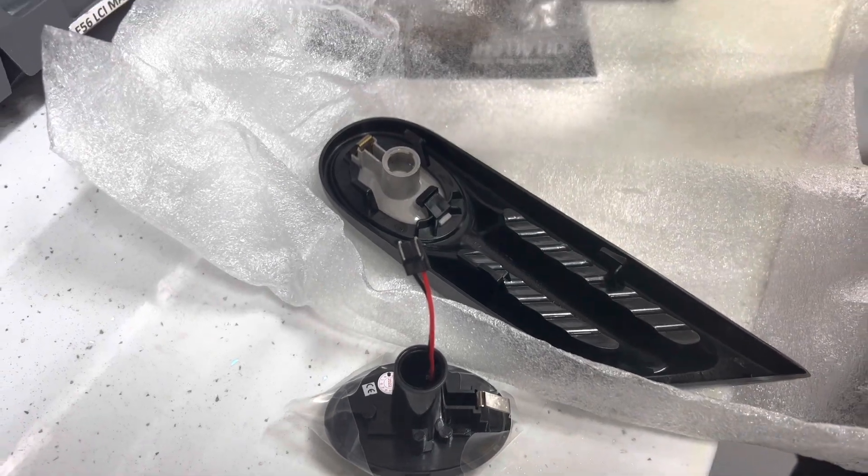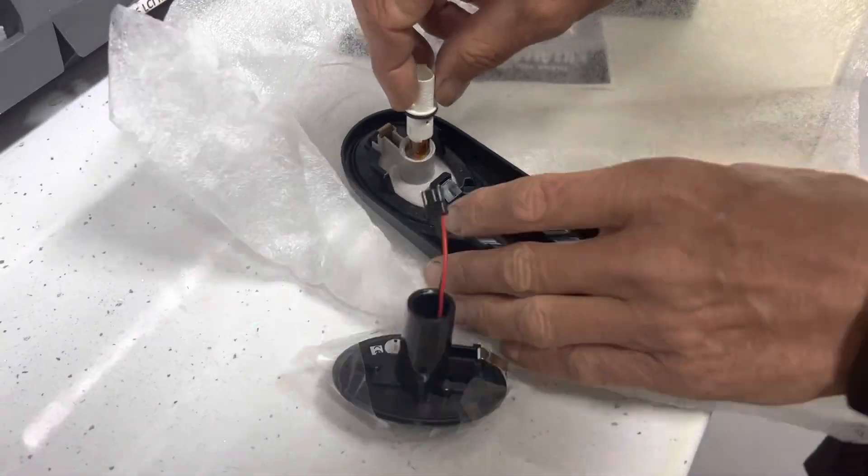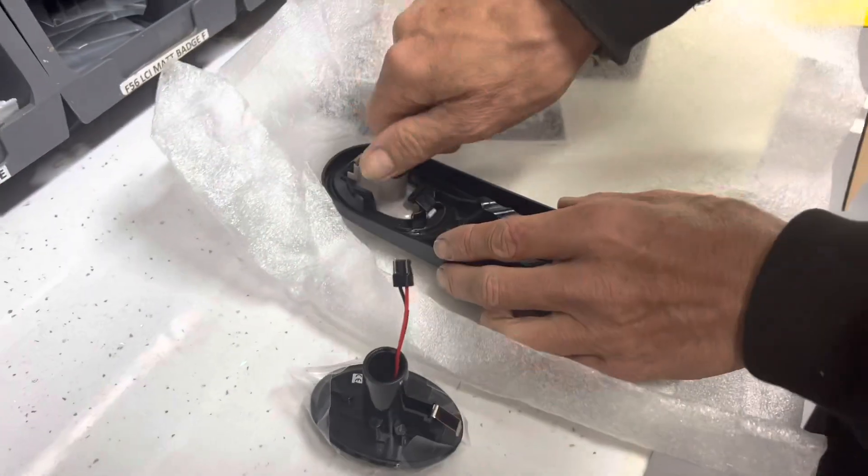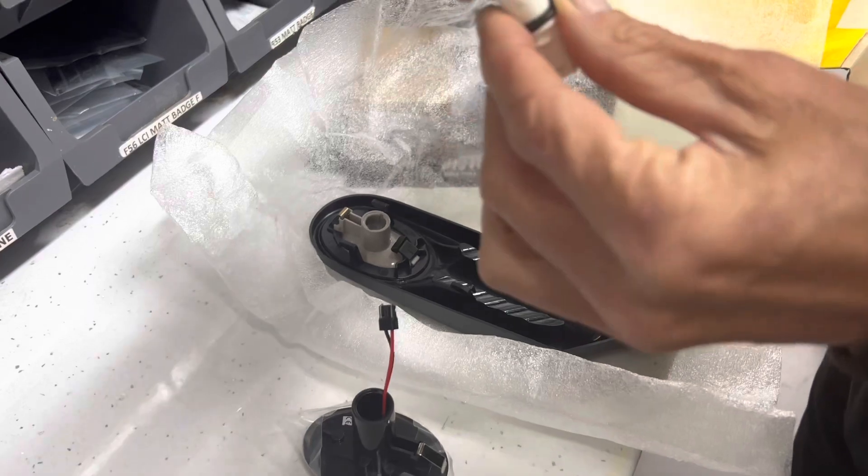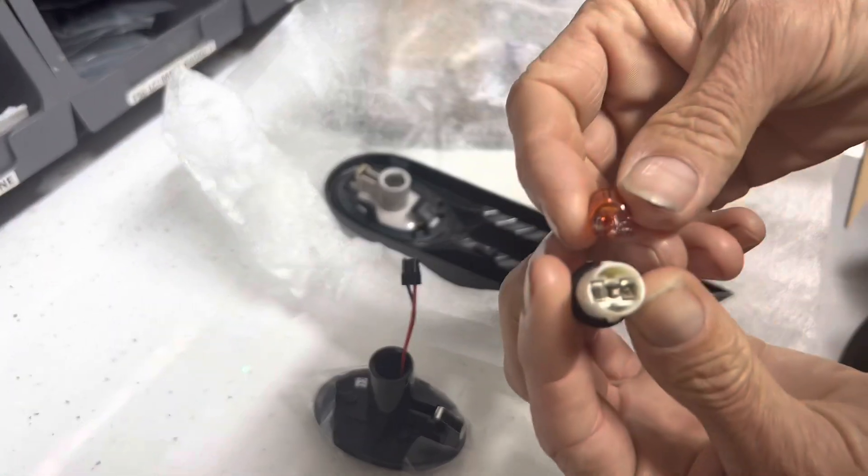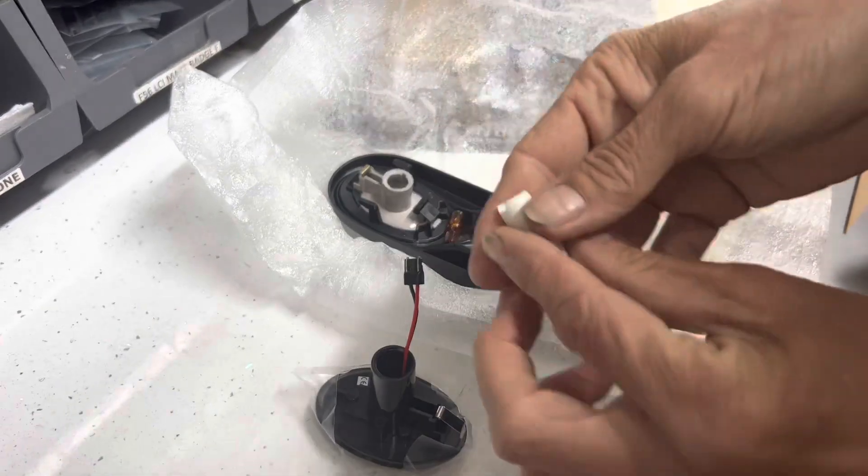Okay guys, just an update on fitting the indicator. This is your original locking one from the car. When you take that out, you're only going to remove the glass portion of the bulb. As you can see there, that's the bit that comes out.